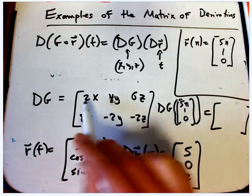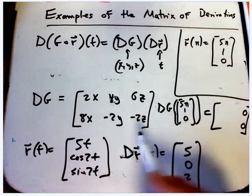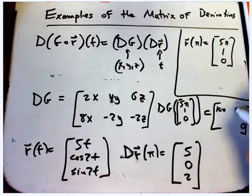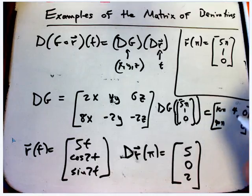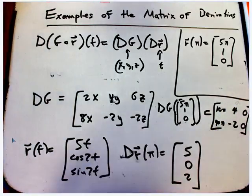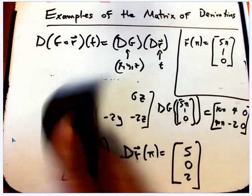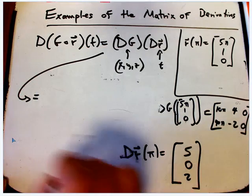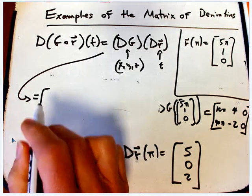And so dg at (5π, 1, 0). So I need to evaluate this guy. Okay. So the z's are going to die. 2x is going to be 10π, 4y is just going to be 4, and 40π, and -2. Okay. And now we're just going to multiply these two matrices. So that's pretty cool. I think I can get away with erasing this stuff. So this is just going to be the product of these two matrices.